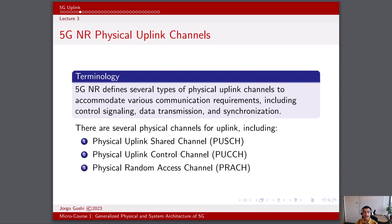The physical random access channel, PRACH, provides a mechanism for devices to request resources for uplink transmission. During the initial access procedure, the user device transmits a PRACH preamble — a short and predefined signal — to the base station, which uses this preamble to estimate the channel conditions and synchronize with the device's timing. 5G NR's physical uplink channels are designed to support massive IoT deployments with lower-powered devices transmitting sporadic and small data payloads efficiently, and employ advanced power control mechanisms including both open-loop and closed-loop strategies.